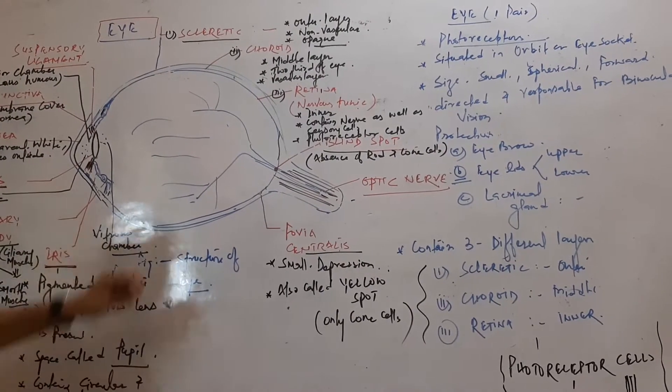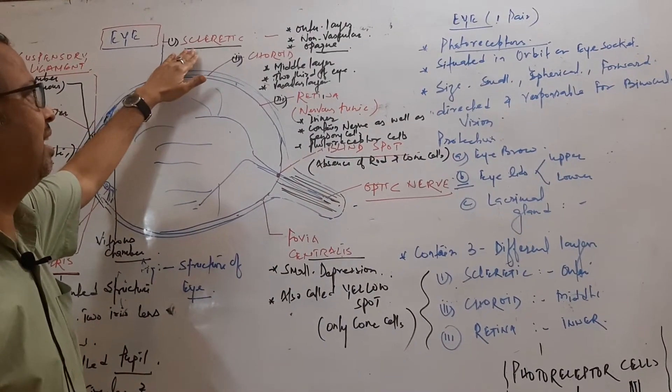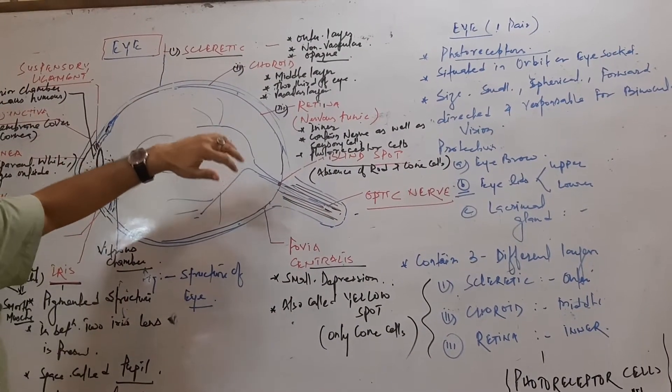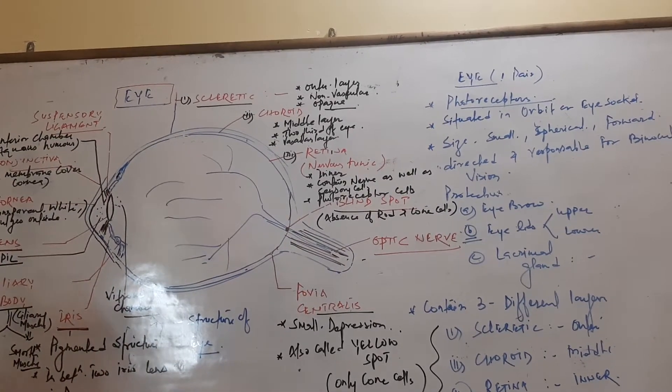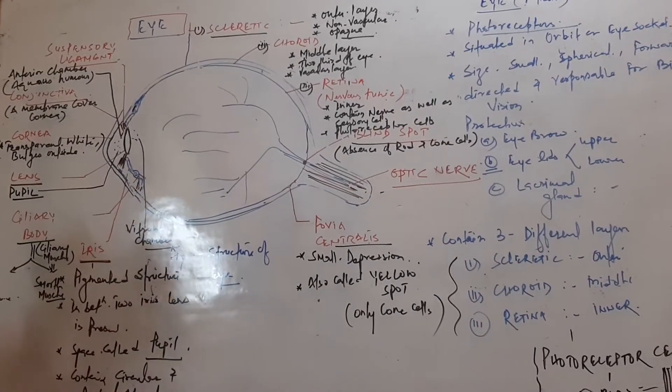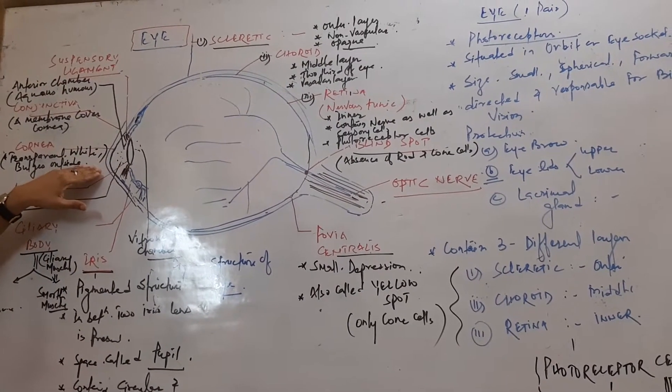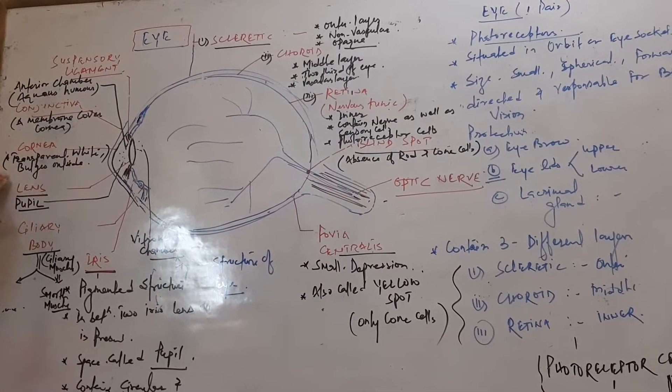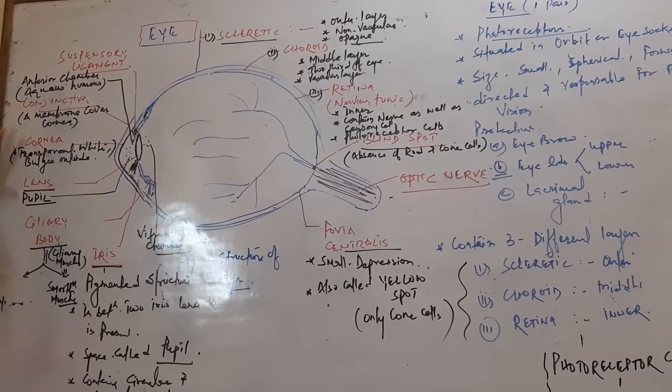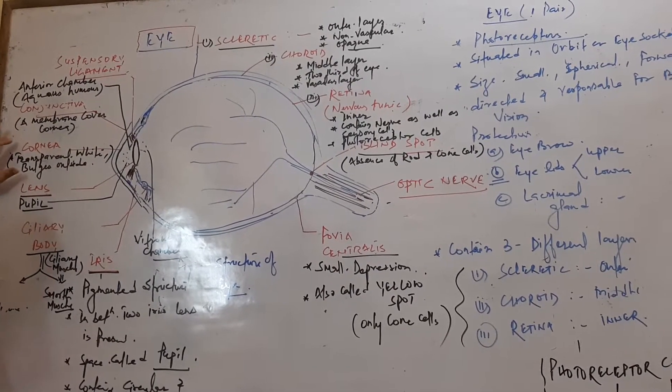We start from the outer layer. Sclera is a non-vascular opaque layer, and at the anterior it becomes transparent and forms a structure called cornea, which is white in color.